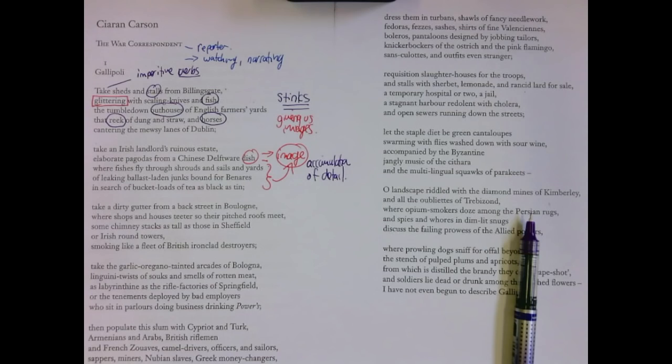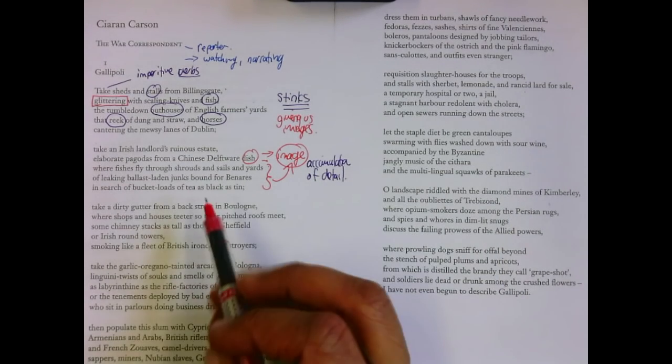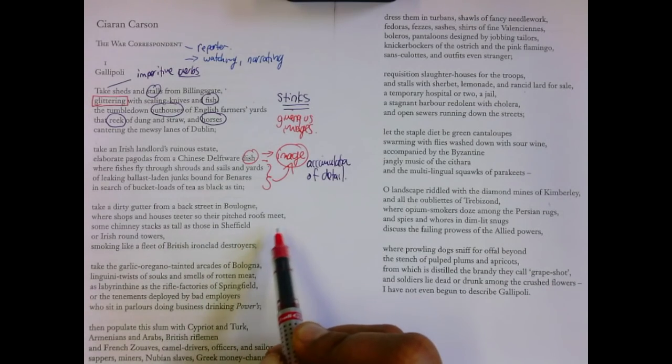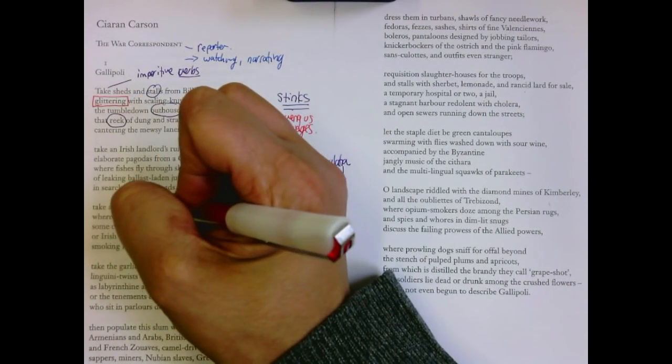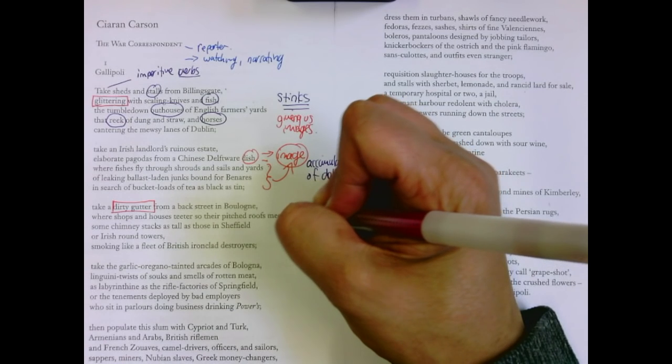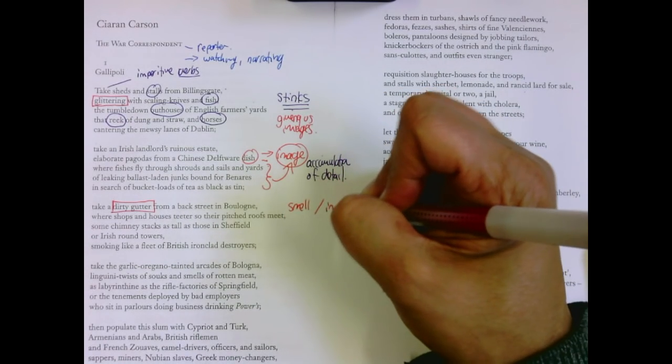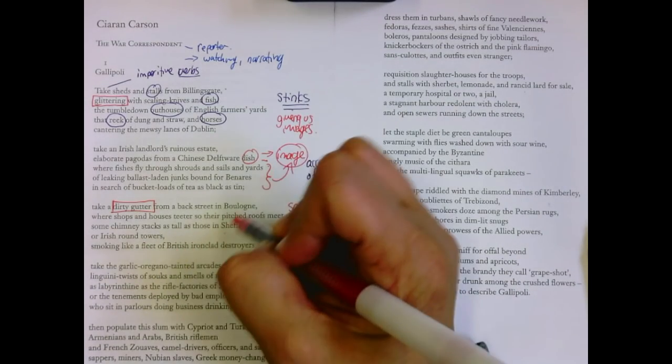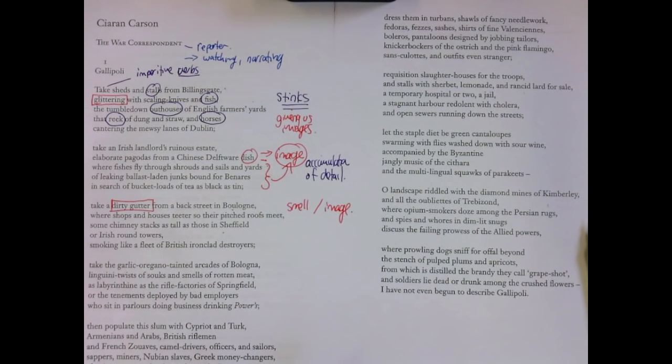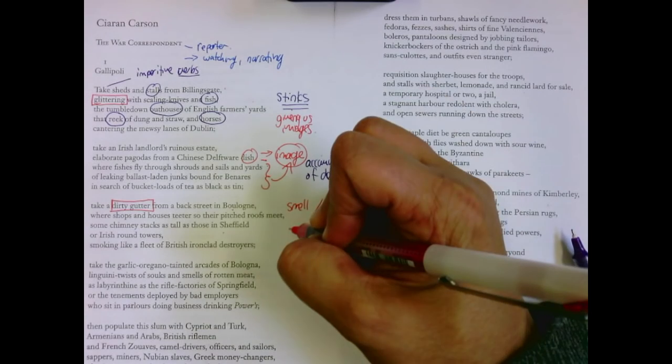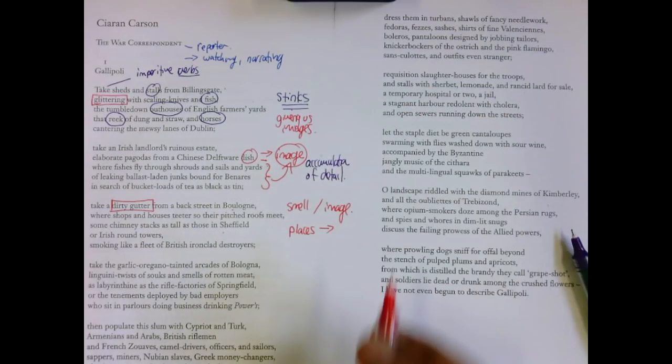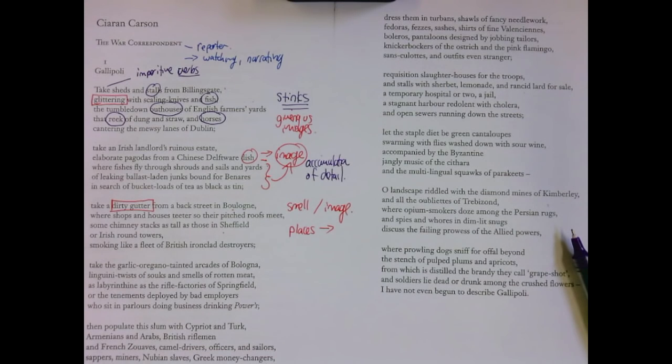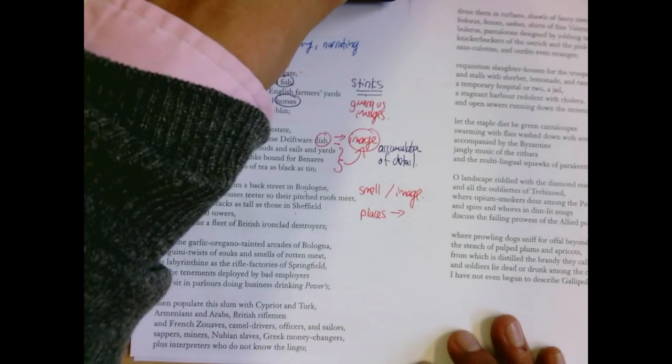Take a dirty gutter from a back street in Boulogne where shops and houses teeter so their pitched roofs meet. Dirty gutter. There's smell and there's imagery. Some chimney stacks as tall as those in Sheffield or Irish Round Towers, smoking light of the fleet of British ironclad destroyers. So now we're getting places. Bring all the places as well.